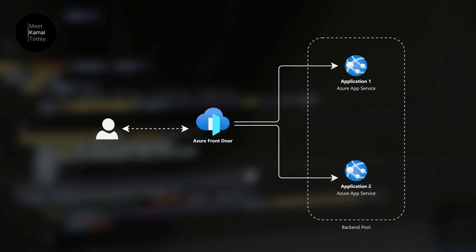Now let's go into the demo. The first thing we're going to do is create two app services, then create Azure Front Door and connect these two applications. These two applications will sit in a backend pool, and then we'll stop application two to see how Azure Front Door uses its health probes to determine which service to use.